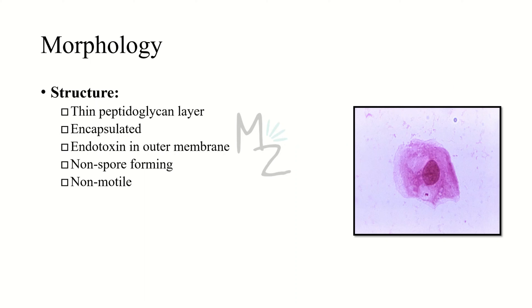It has a thin peptidoglycan layer in its cell wall. Due to that, it does not retain the dye and stains pink or red. It is an encapsulated bacterium, meaning it has a prominent polysaccharide capsule that plays a really important role in the virulence of this bacterium. It also has an endotoxin in its outer membrane that is lipo-oligosaccharide, in contrast to gram-negative rods — especially the enteric ones — which have lipopolysaccharide.